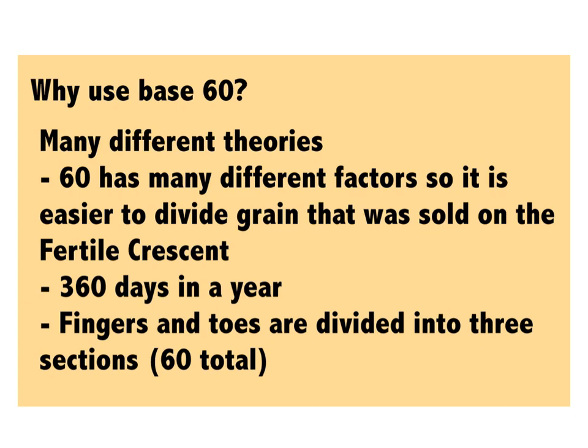Another theory is when we combine fingers and toes, we have 20, and 20 times 3 gives us 60. So 60 divided into 3 sections is the number of fingers and toes. That's another theory as to why we use base 60.